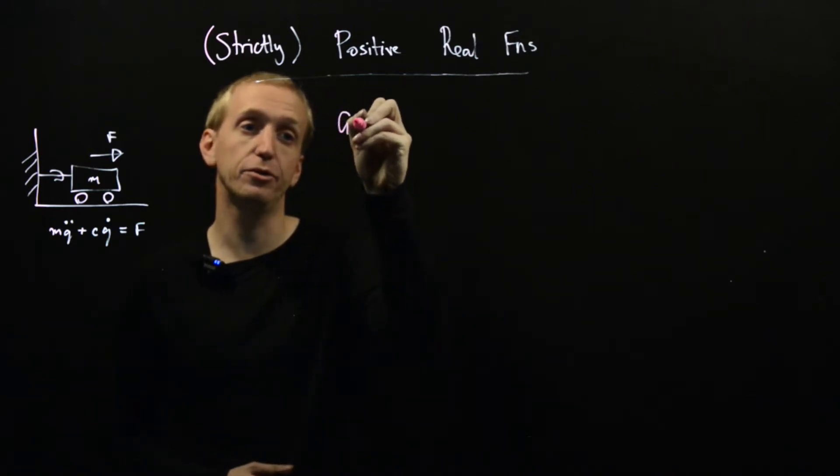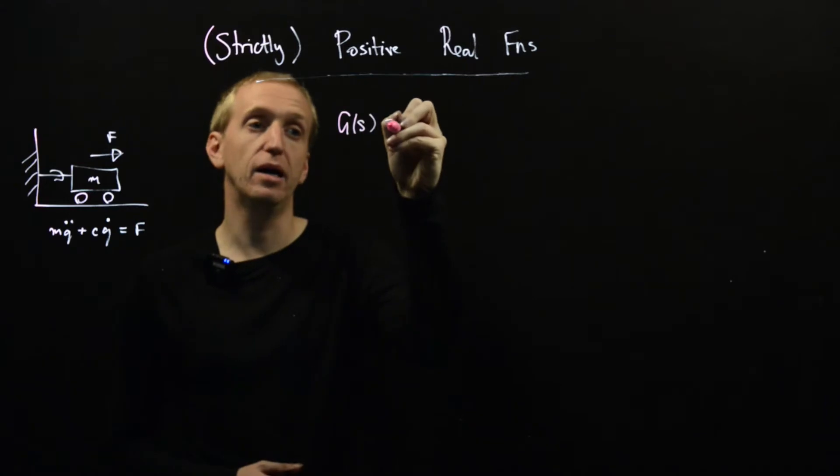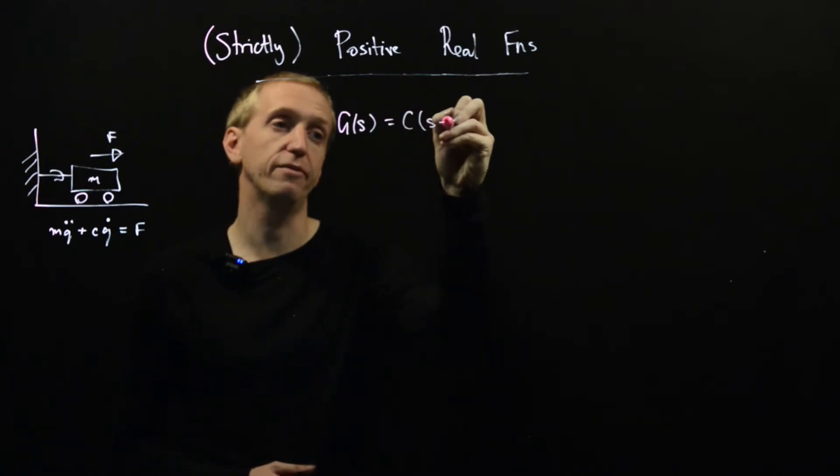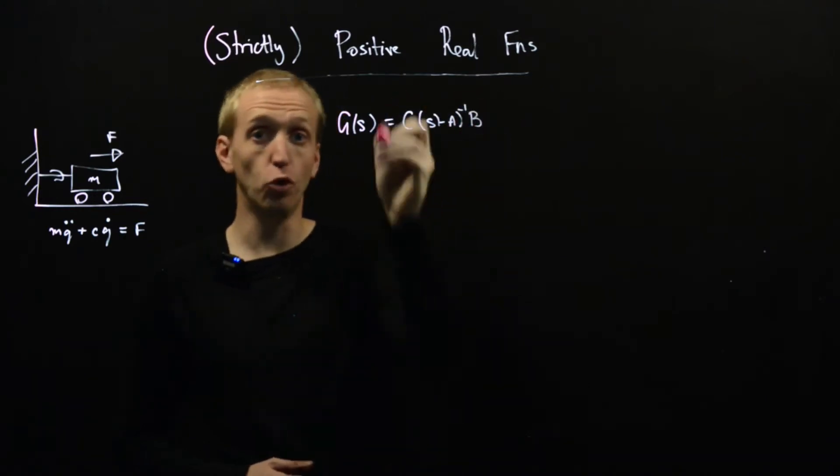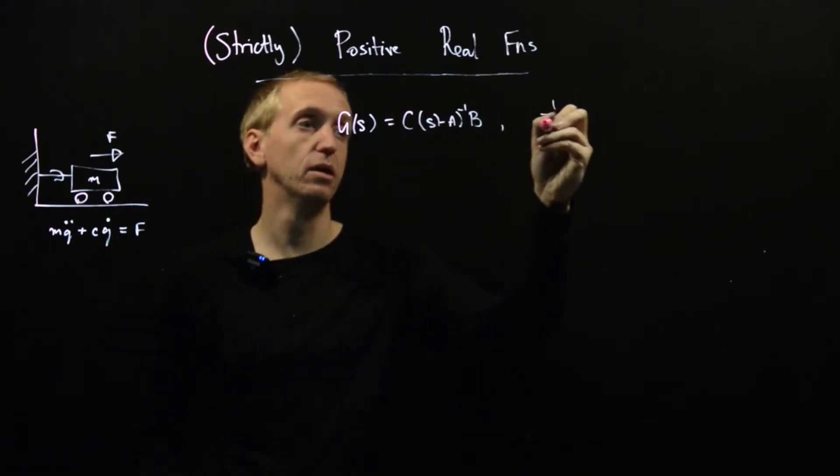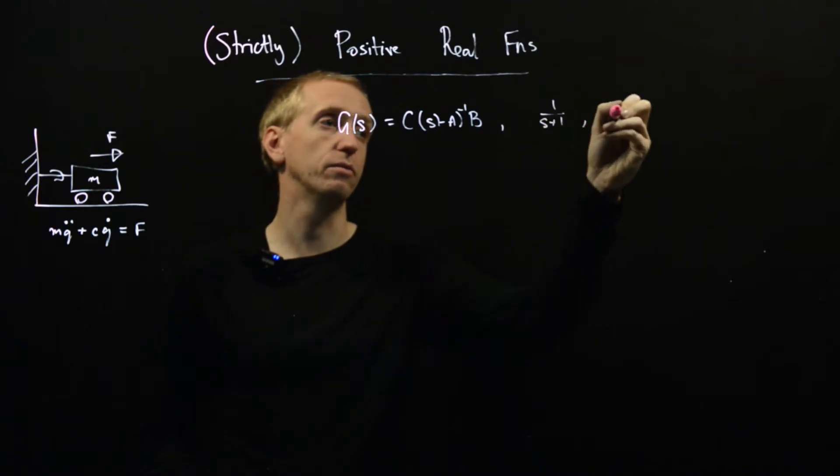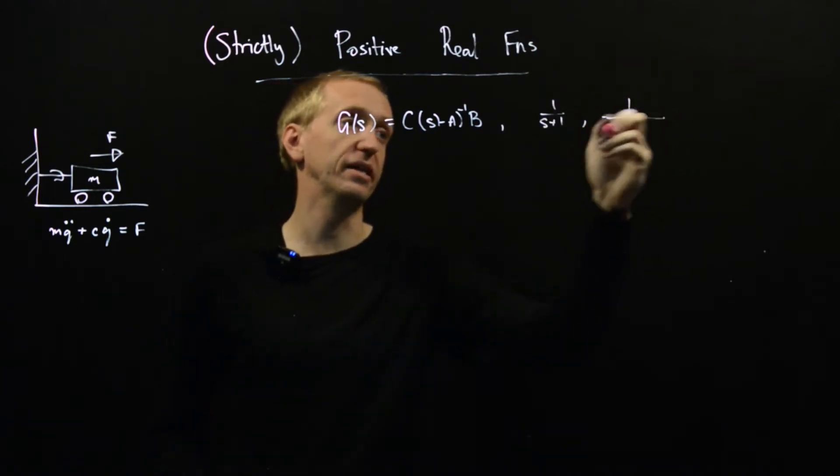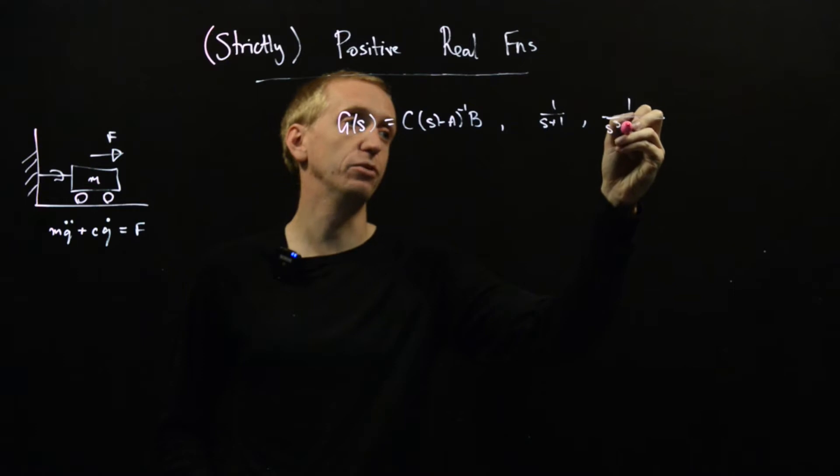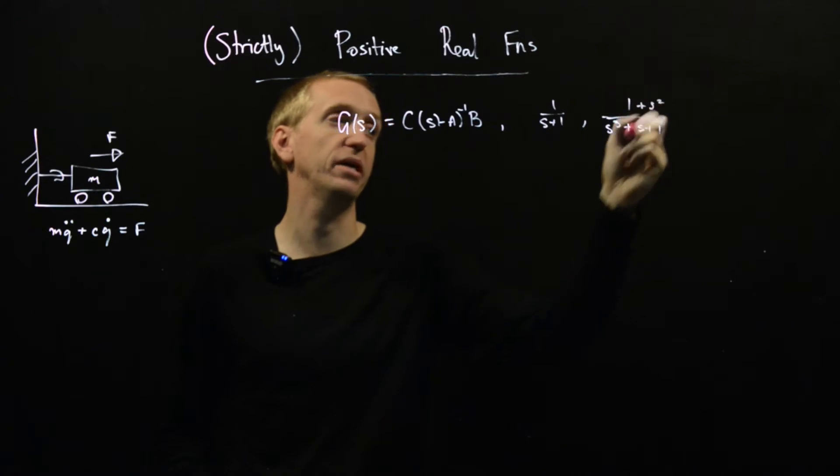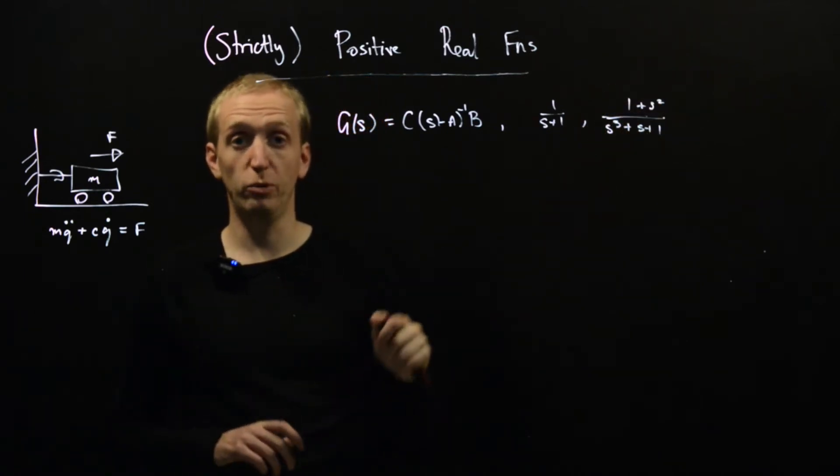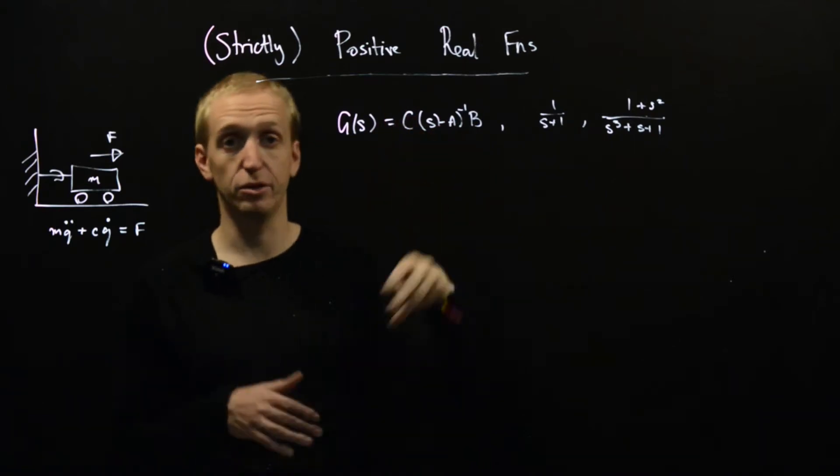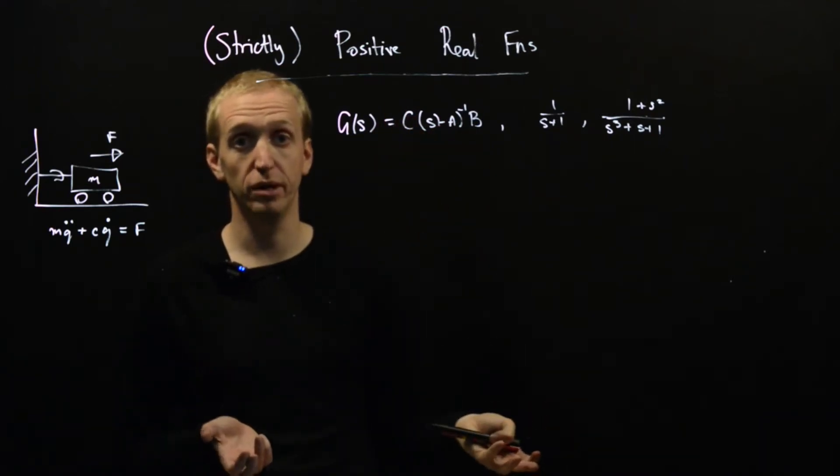So today we're just going to be talking about transfer functions g of the form si minus a inverse b. So this is just a normal scalar transfer function, something like 1 over s plus 1, or whatever we want here, s cubed plus s plus 1, and we can put a plus s squared up here. So transfer functions like this, and we want to talk about what makes a transfer function positive real or strictly positive real.